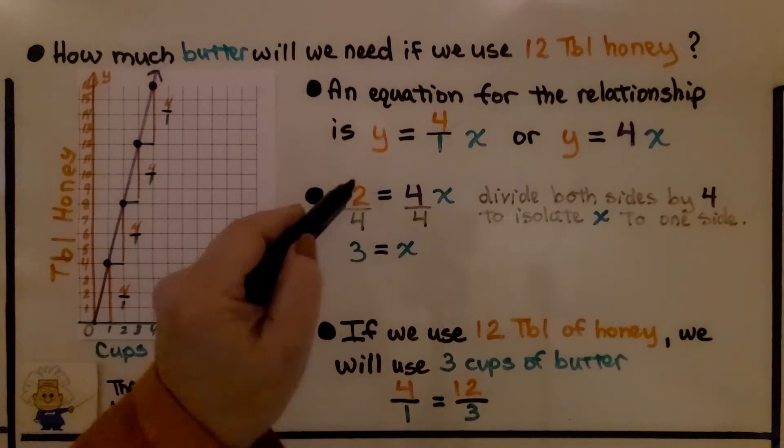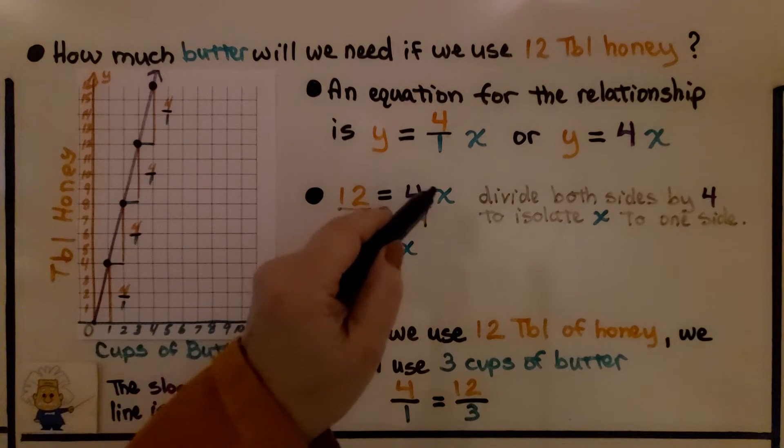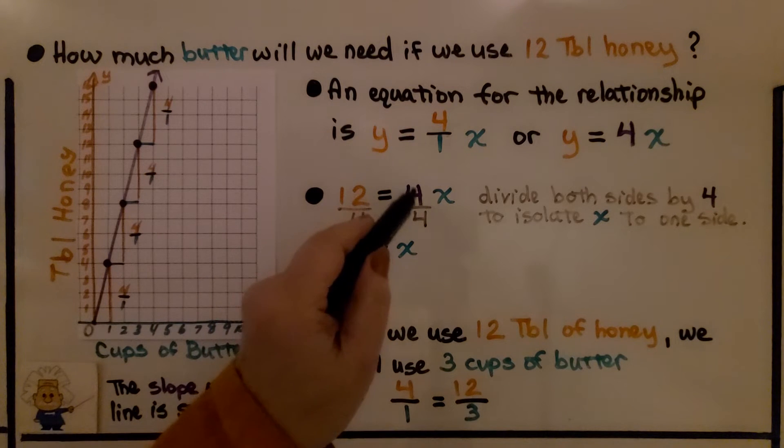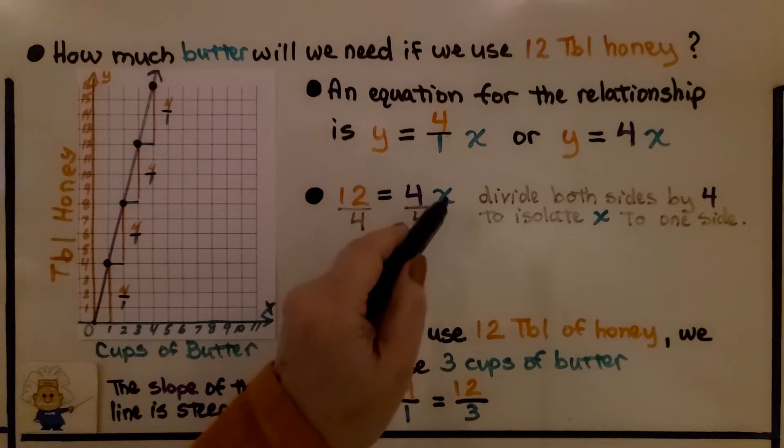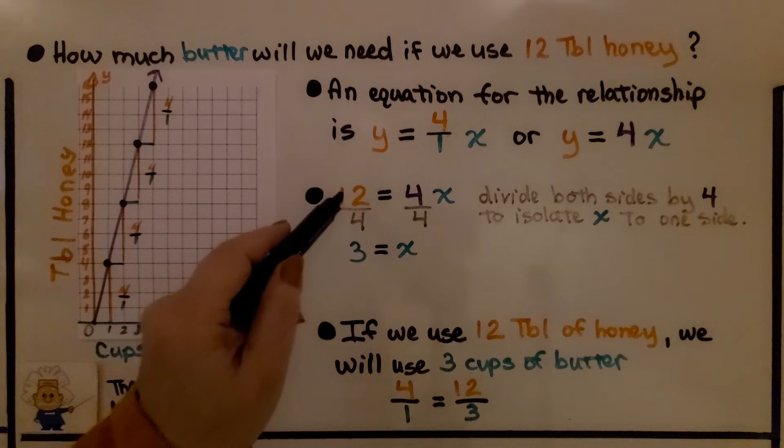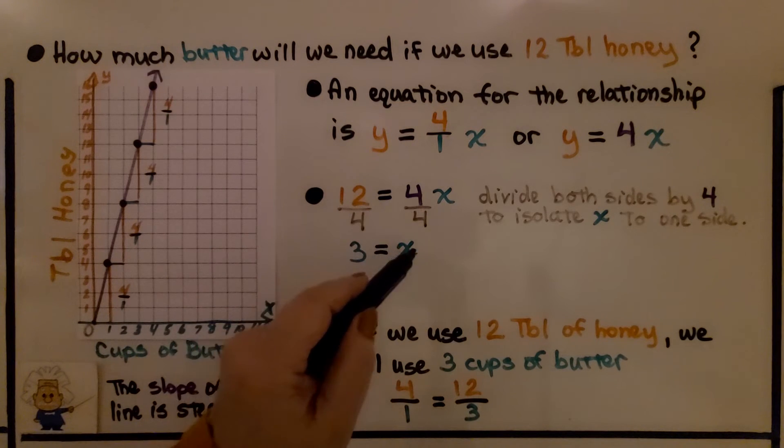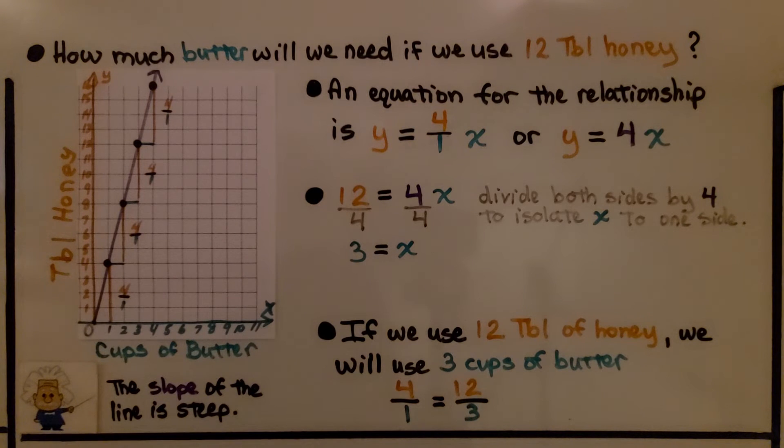We have 12 tablespoons of honey is equal to 4x. We divide both sides of the equation by 4 to isolate x to one side. 12 divided by 4 is 3, 4 divided by 4 is 1, so we have 1x. We have 3 is equal to x. If we use 12 tablespoons of honey, we'll use 3 cups of butter. We have 4 to 1 is equal to 12 to 3.